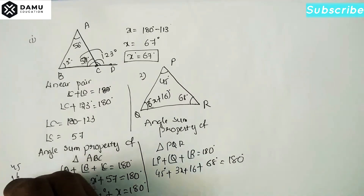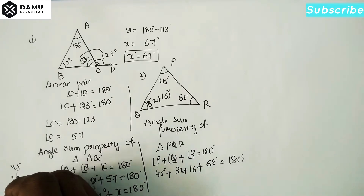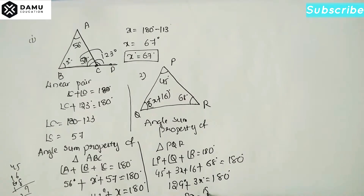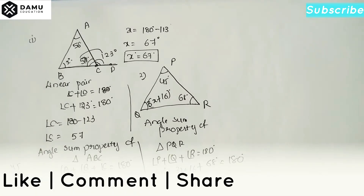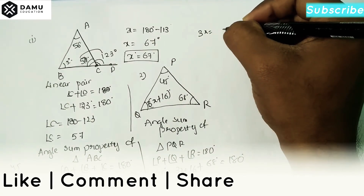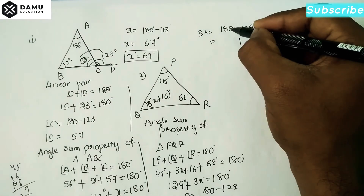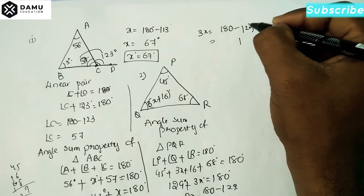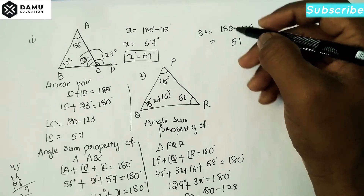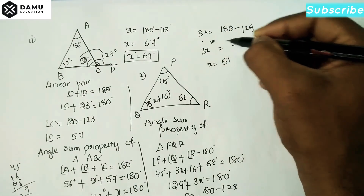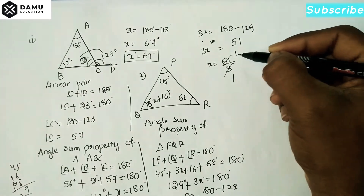So 45 plus 16 plus 68 equals 129. Therefore 129 plus 3x equals 180 degrees. So 3x equals 180 minus 129, which is 51. Then x equals 51 divided by 3, which gives x equal to 17 degrees.